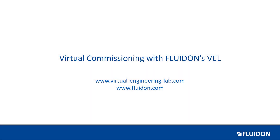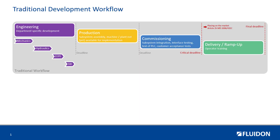More and more companies are converting their traditional development process to a more modern model-based development process. The traditional development process is often characterized by the sequential processing of development tasks — for example, first the mechanics, then the hydraulics, and finally the control technology. In addition, development results are only brought together at a late point in the product development process, namely during commissioning.